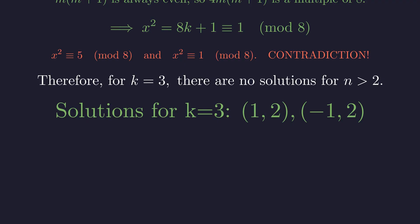So the only integer solutions when k equals 3 are the two we found by testing: (1, 2) and (negative 1, 2).